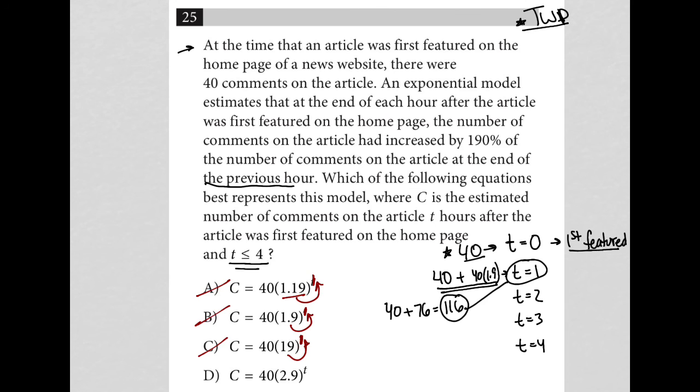So choice D better be correct, but we've got to try it out. For choice D, I'd have 2.9 to the first power, which is just 2.9. So I try 40 times 2.9, and I get 116. So choice D therefore must be the correct answer because it's the answer that gives me 116 when T equals 1.